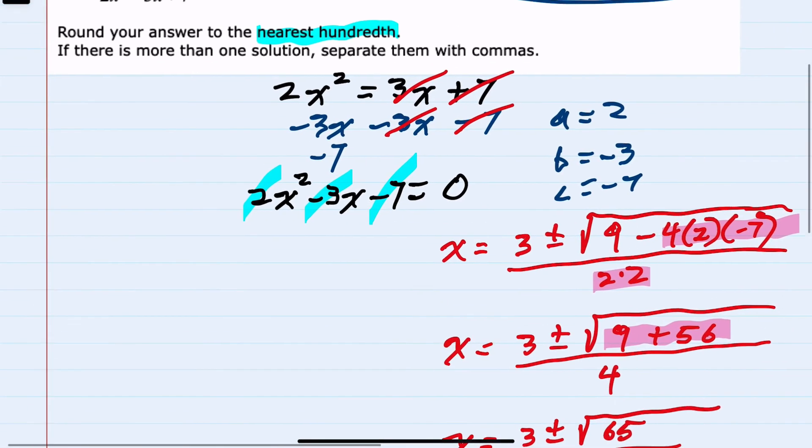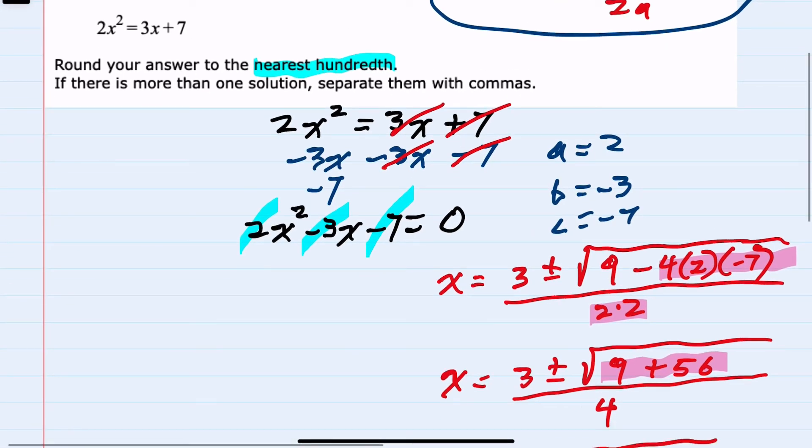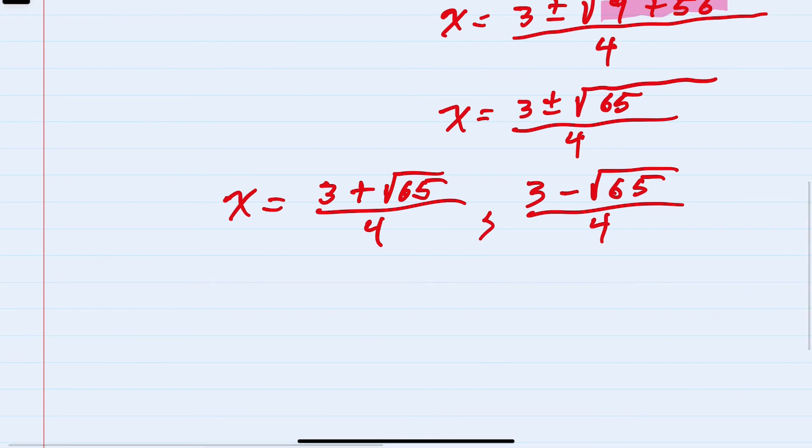a decimal solution rounded to the nearest hundredth. Plugging these into a calculator, the first solution would be 2.765, which rounds to 2.77, and the second solution would be negative 1.265,